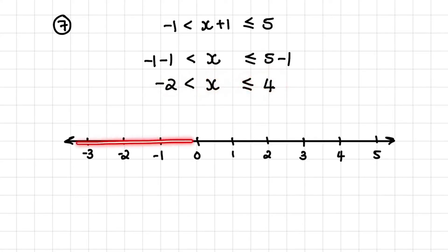Let us consider a number line. We find negative 2 on the number line and we indicate negative 2 with an open circle. We also find 4 on the number line and we indicate that with a closed circle because x can be smaller or equal to 4.